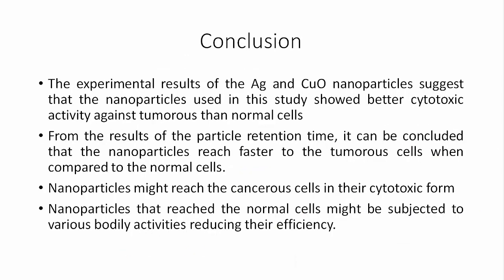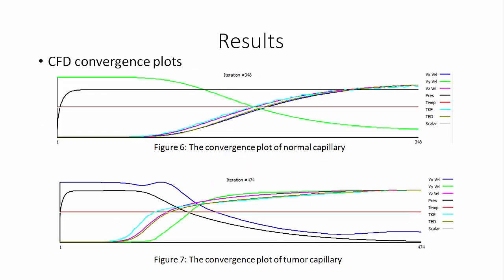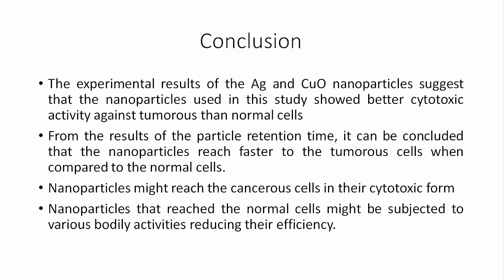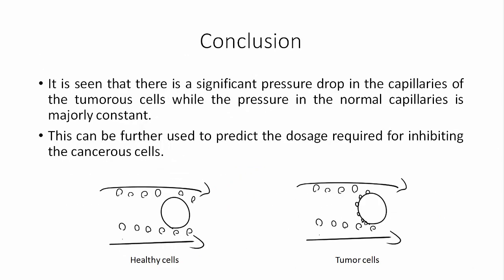From the retention time results, we conclude that nanoparticles reach tumor cells faster than normal cells. Additionally, many metabolites in the human body — ranging from lactic acid to amino acids — reduce the toxic effect of the nanoparticle by binding to it. The drastic pressure change also suggests that nanoparticles are accumulating near tumor cells but not in healthy tissue. This could be applied in dosage studies.